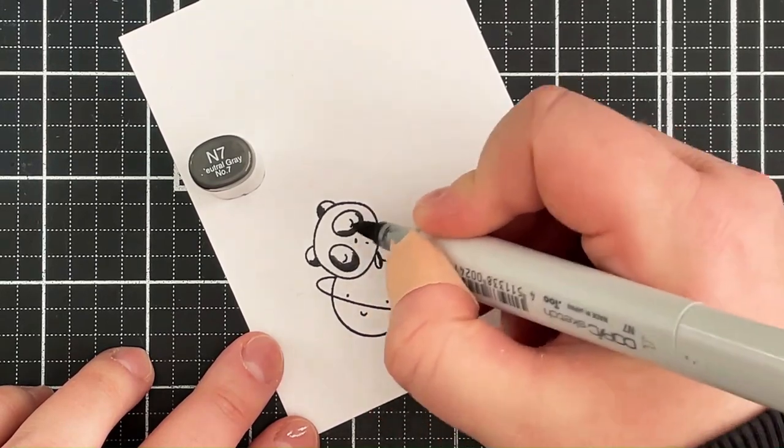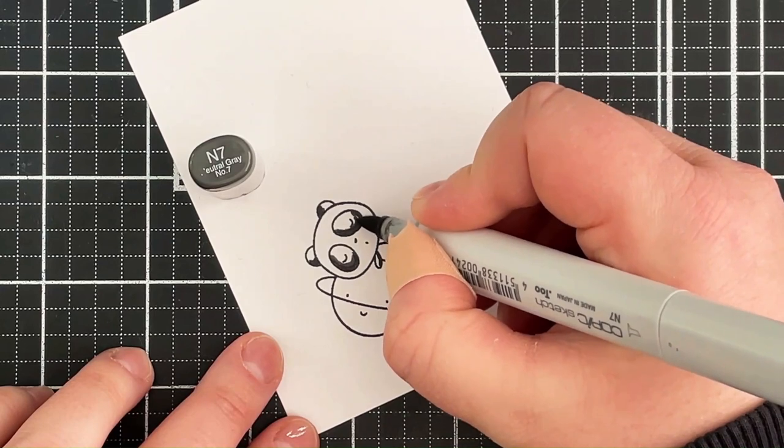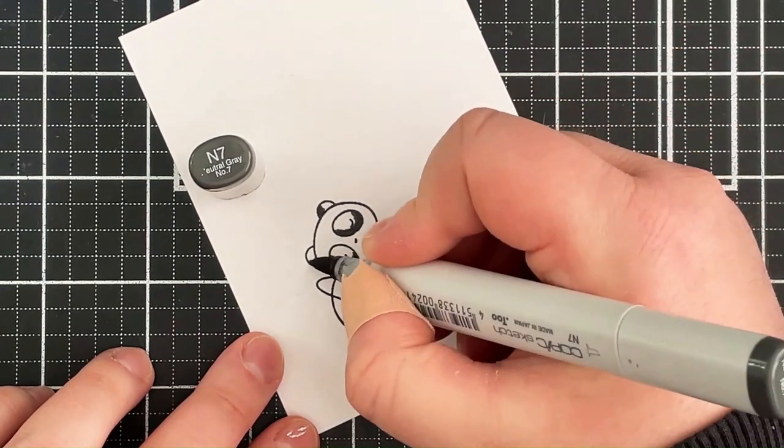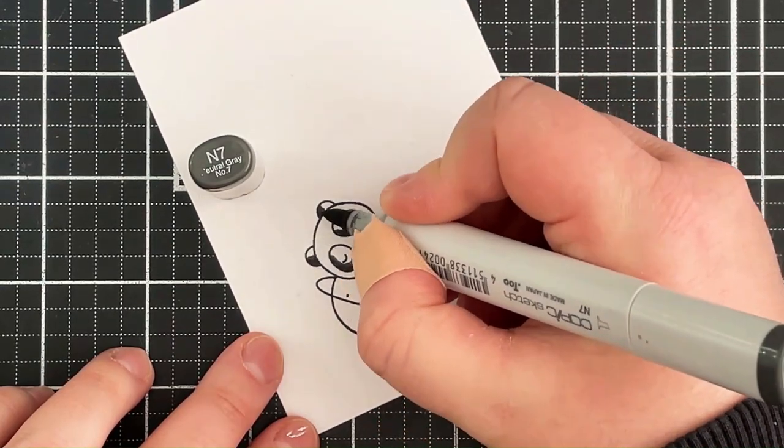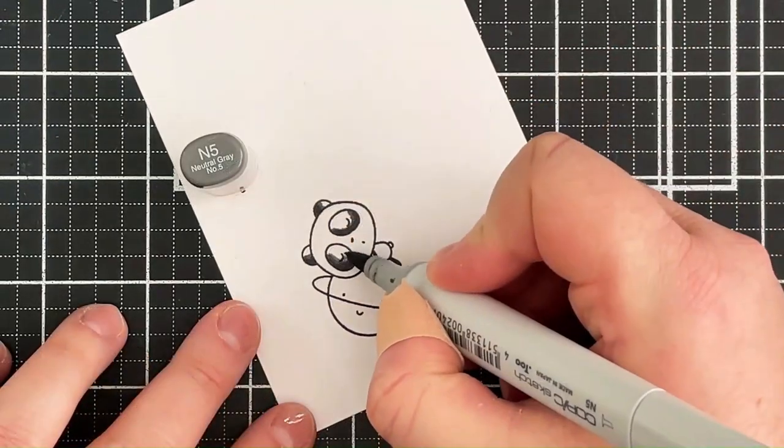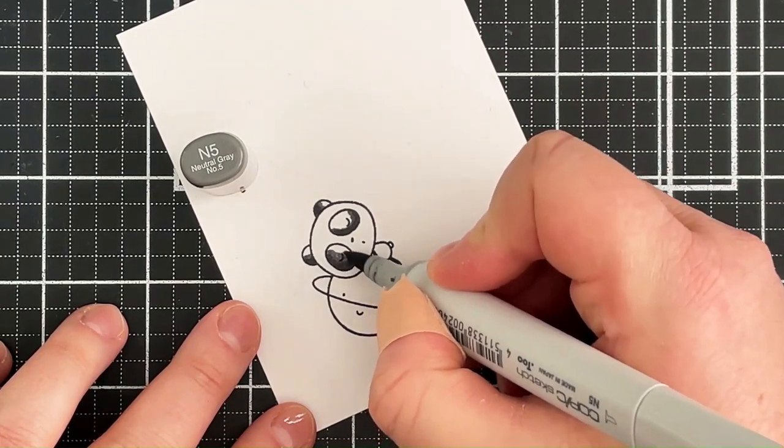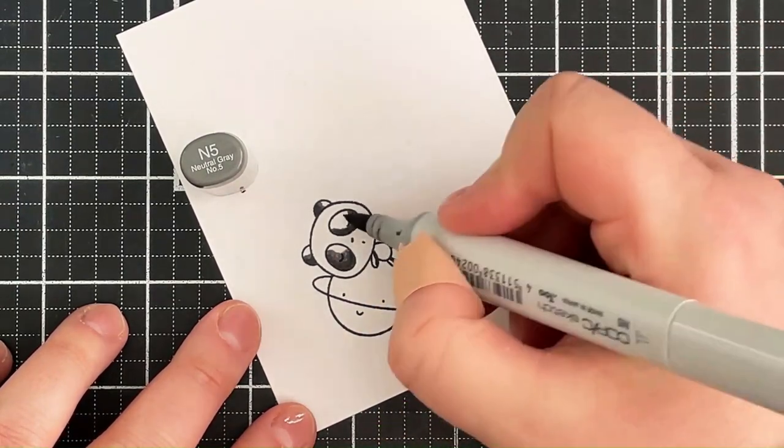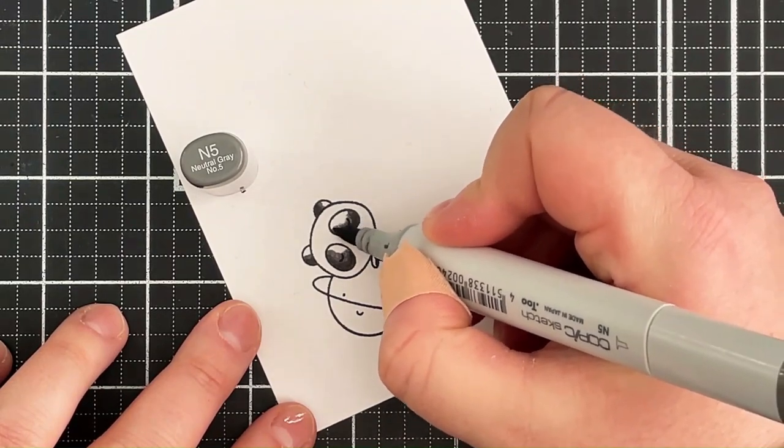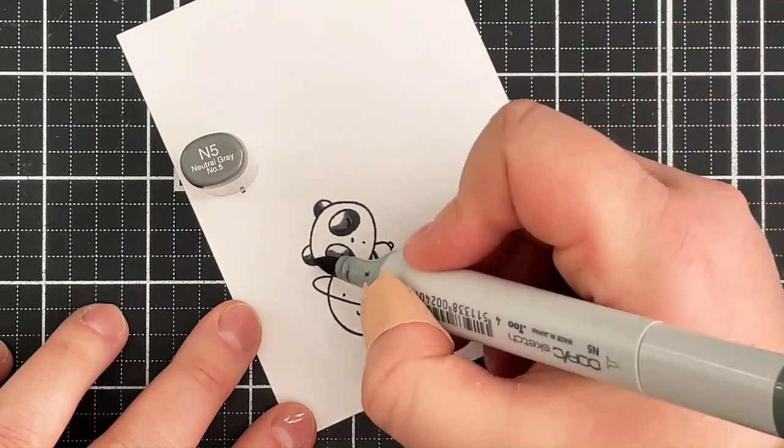I'm then going to blend that out using the N7 and I'm trying not to add too much darkness to these eye patches because I want to be able to see the stamped lines underneath. I'm then going in with the N5 and blending that out further. I didn't actually use the N7 on the arms or the legs just because they're such tiny areas so I'm just going to blend that out with the N5.